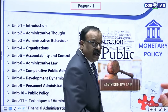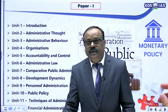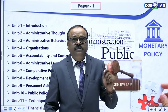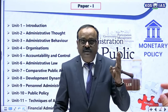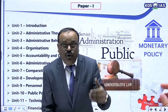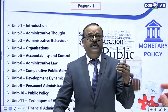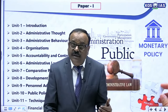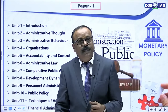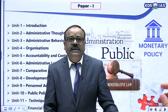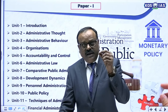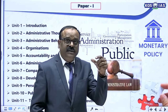As you know, there are two papers in public administration. In paper 1, there are 12 units. Unit 1 is introduction, second is administrative thought, third is administrative behavior, fourth is organizations, fifth is accountability and control, sixth is administrative law, seventh is comparative public administration, eighth is development administration or changing profile of development dynamics. Thereafter, personnel administration, public policy, techniques of administrative improvement, and financial administration — the 12th unit.